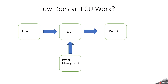The ECU then communicates to an actuator to perform an action based on the input. A door lock ECU would activate an actuator that locks or unlocks the corresponding door. An airbag ECU would choose which airbag to deploy depending on the location of the passengers and then direct the actuators to deploy them. An automatic emergency braking ECU would engage the brakes to prevent a collision. All these actions are taken based on the input given to the ECU, and the ECU takes the appropriate action.